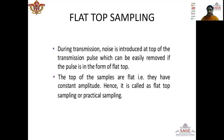In natural sampling, the amplitude of the carrier pulses varies according to the amplitude of the message signal, and the top of the pulses follows the curvature of the message signal. But in natural sampling, during transmission, when noise is introduced at the top of the pulse, the amplitude of the signal gets affected and the signal becomes corrupted. But in flat top sampling, this noise on the top of the pulse can be easily removed. Here the top of the samples are flat, that is they have constant amplitude, so they are known as flat top sampling, or also called practical sampling.